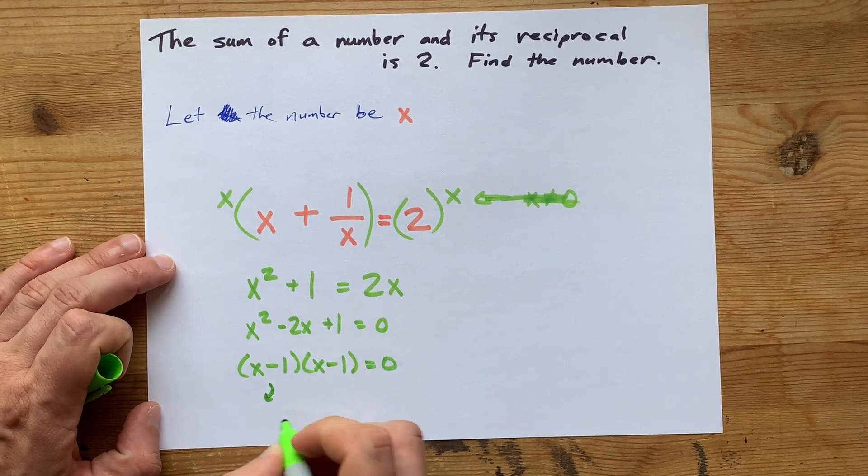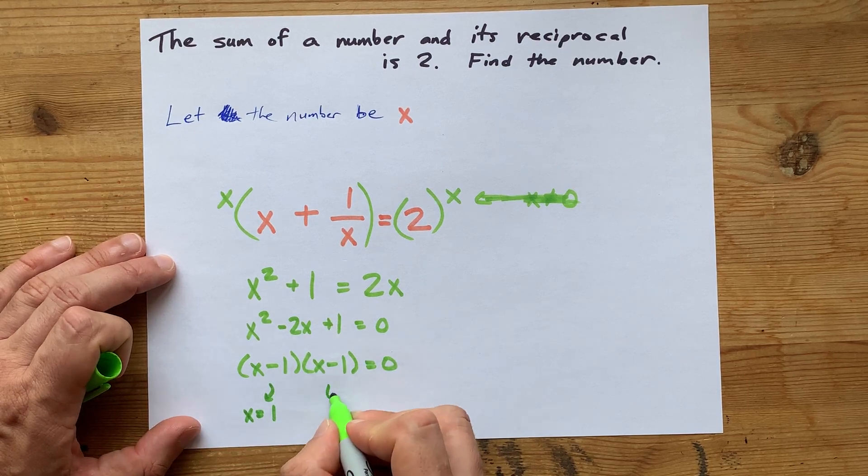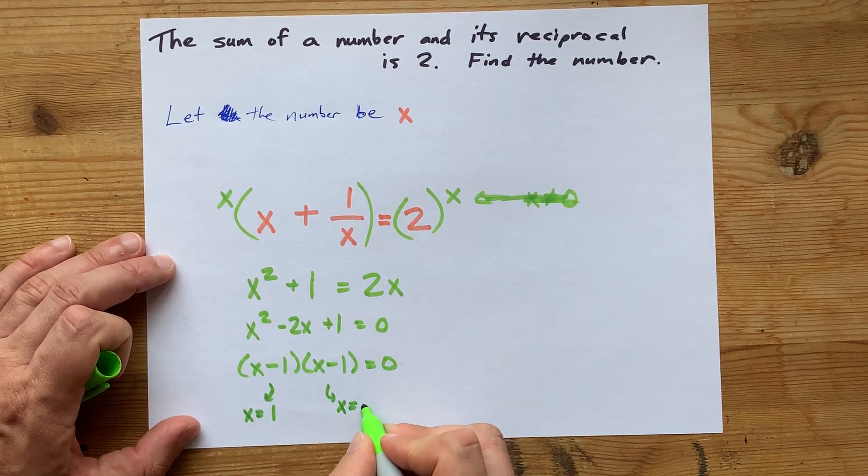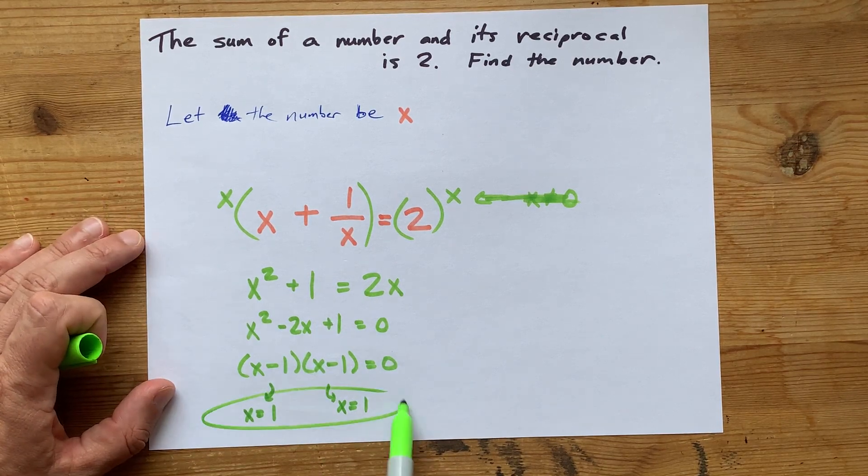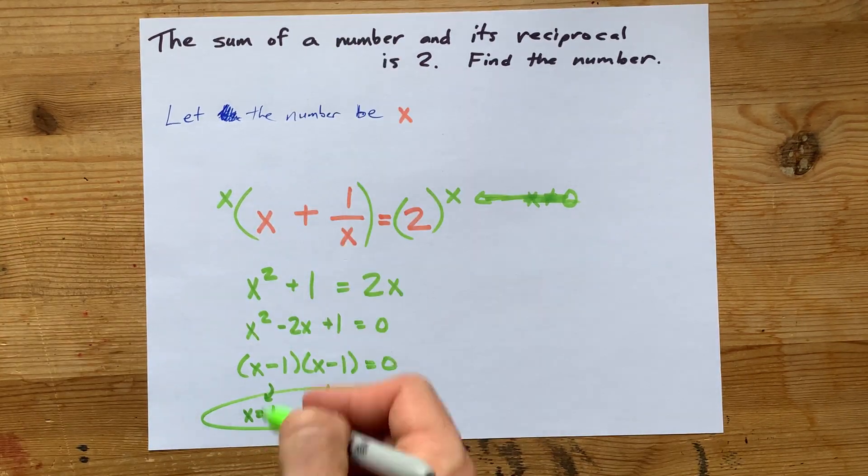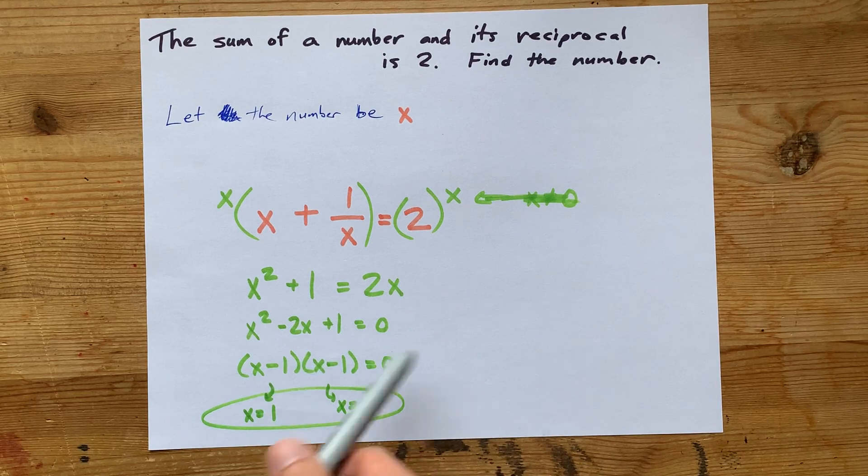This gives me solutions of x equals positive 1, and another solution of x equals positive 1. That means there's only one number that satisfies this riddle, and it's x equals 1.